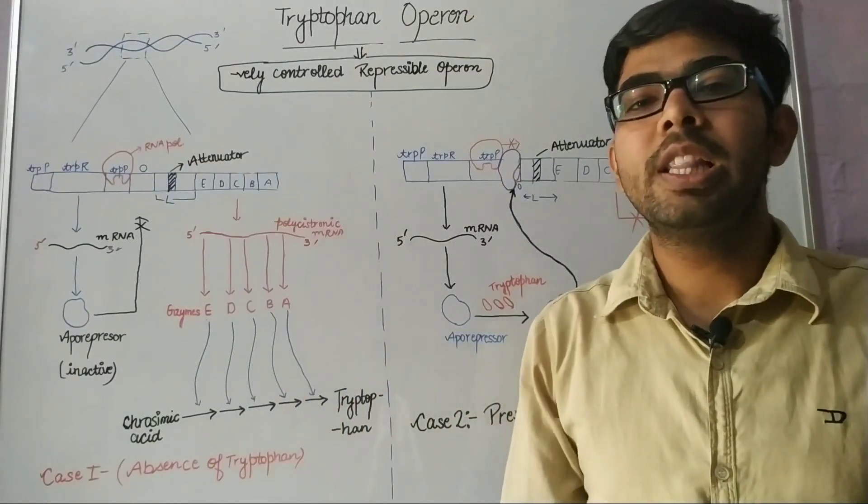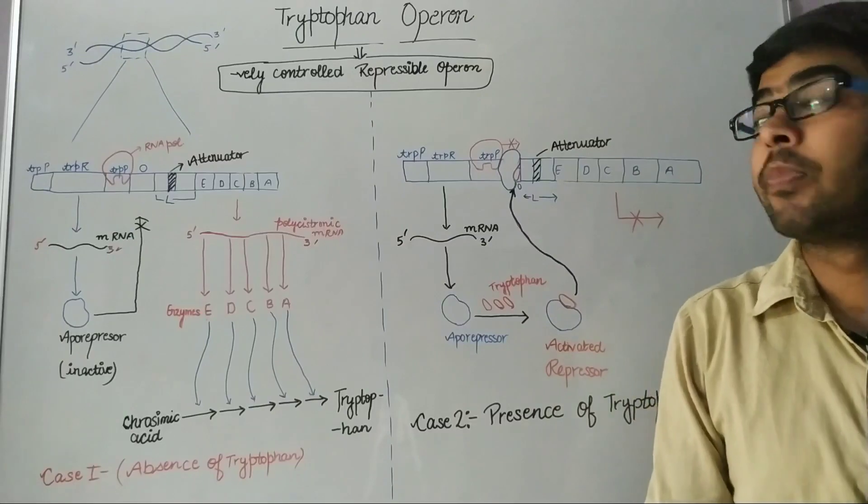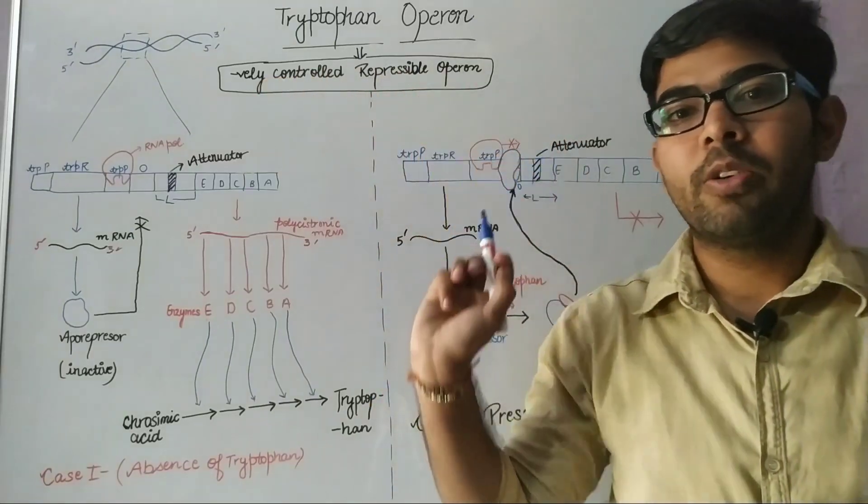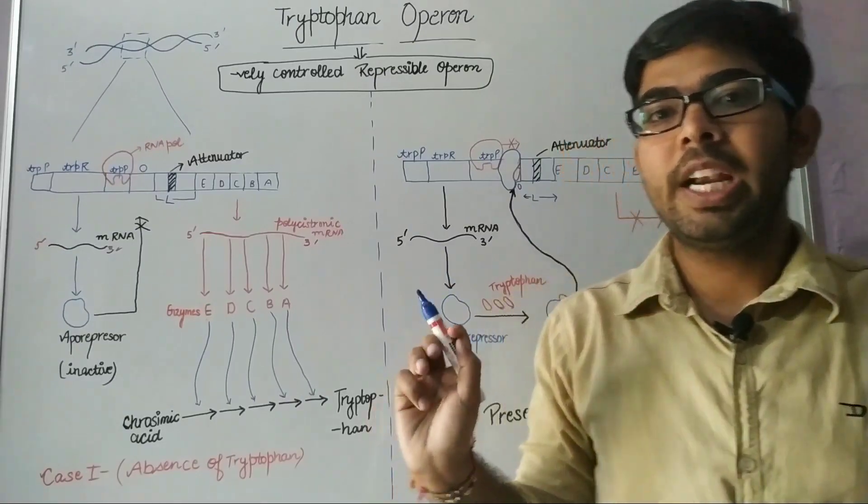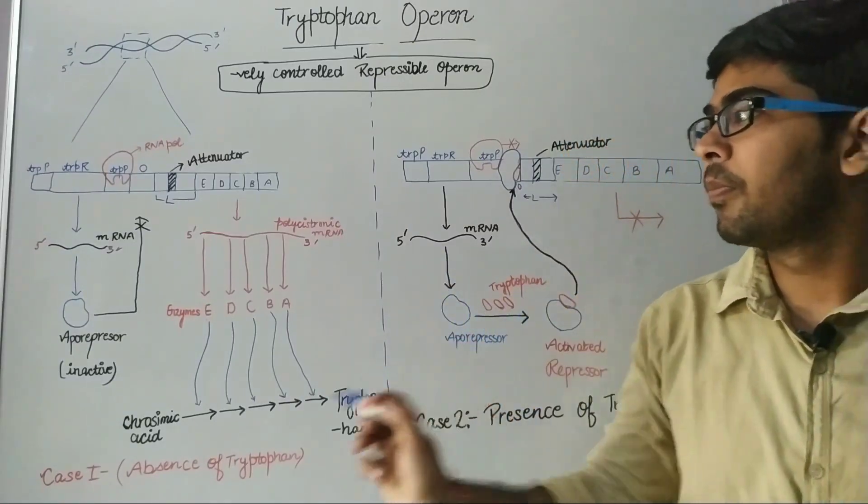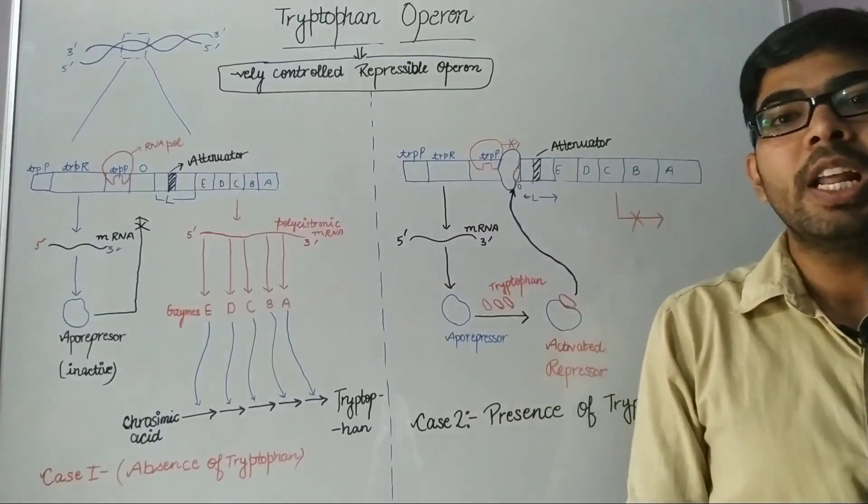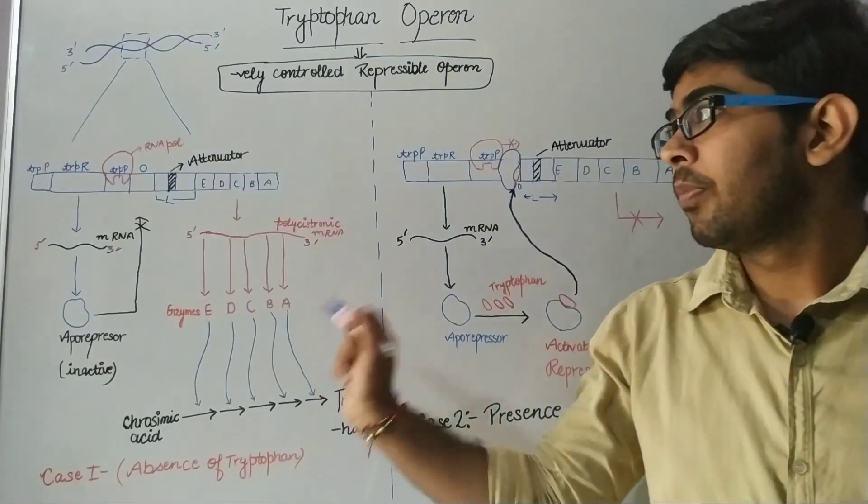There are two cases: in the presence of tryptophan and in the absence of tryptophan. The term negatively controlled repressible operon I will tell you later in my video. First case: when tryptophan is absent in the E. coli cytoplasm.